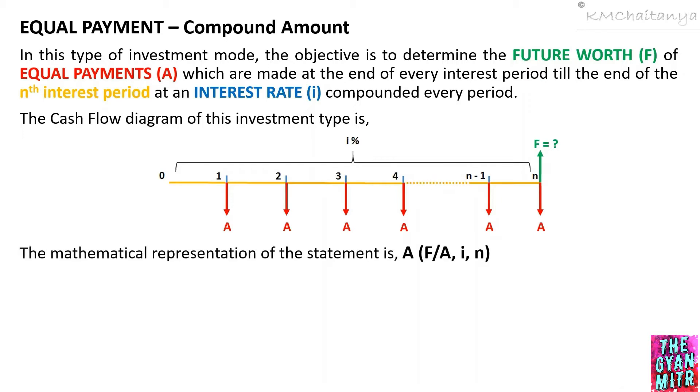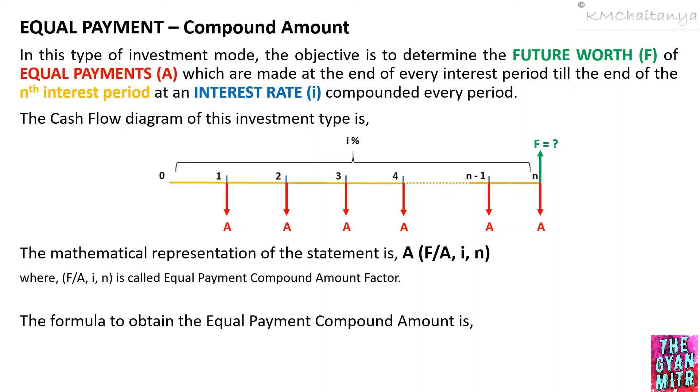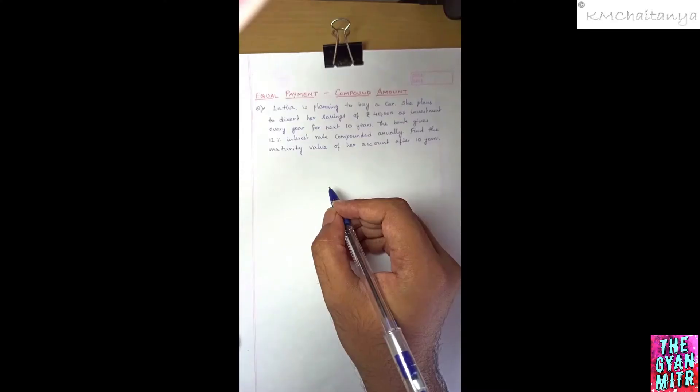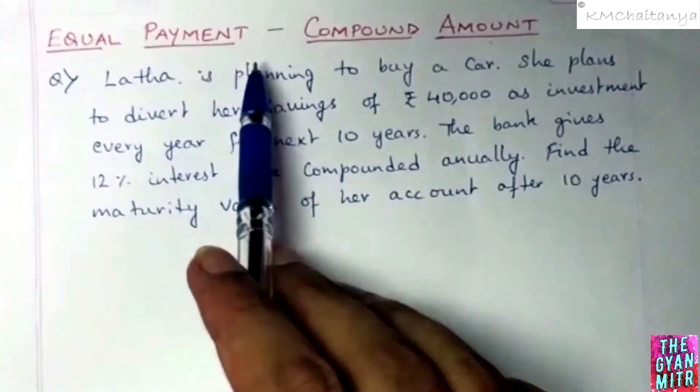The mathematical representation of this situation is known value of A with F which is unknown, with I interest rate and N interest period. The term F slash A I N is called Equal Payment Compound Amount Factor. The formula to obtain the Equal Payment Compound Amount is F equals A into 1 plus I to the power of N minus 1 divided by I. Here I is in terms of decimals.